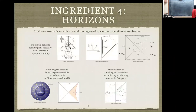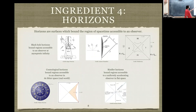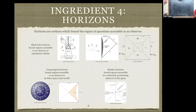The fourth ingredient is horizons — surfaces which bound the region of space-time accessible to an observer. The standard type is a black hole horizon. In a Penrose diagram of collapsing matter becoming a singularity, you can see that from deep inside all light rays go to the singularity and nothing escapes. The separating surface is the event horizon — the boundary of the region accessible to a faraway observer. A Penrose diagram is drawn so that light rays travel at 45 degrees, and represents four dimensions by treating each point as a sphere.